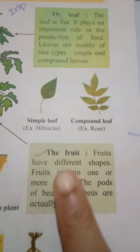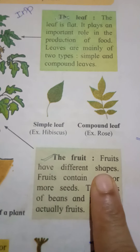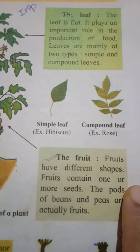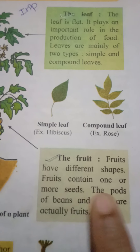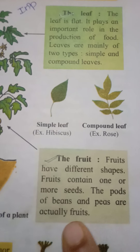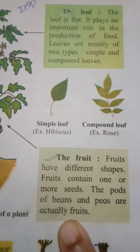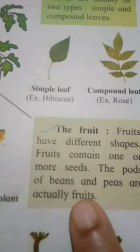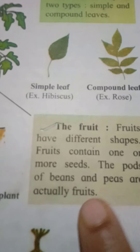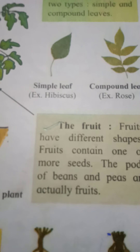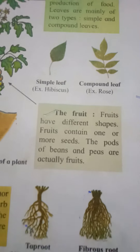Next, the fruit. Fruits have different shapes and contain one or more seeds. The pods of beans are actually fruits — those are the actual fruits with seeds coming inside the pod.